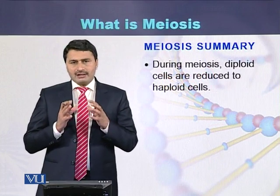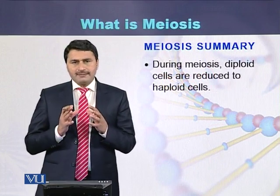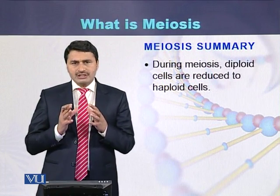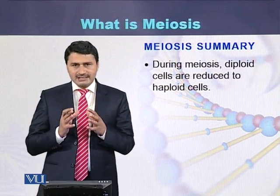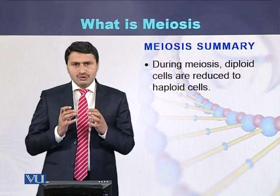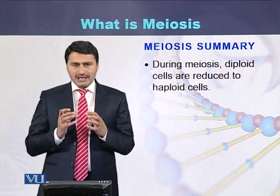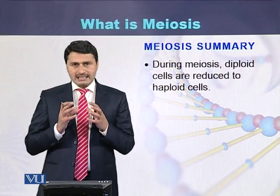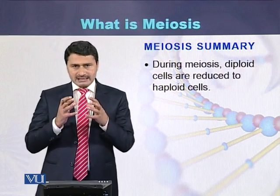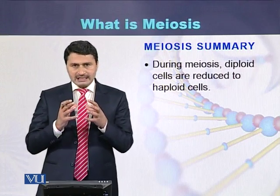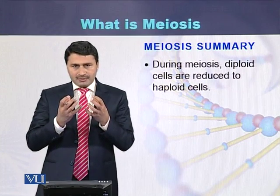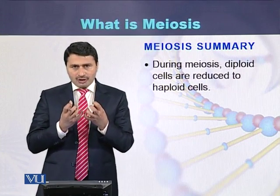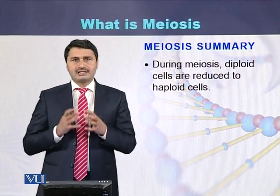So we can conclude that meiosis is a process by which diploid cells are reduced to haploid cells. As a result, a single diploid cell will produce 4 haploid cells.